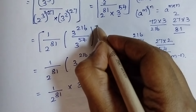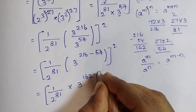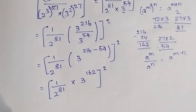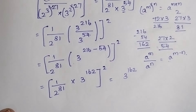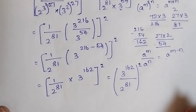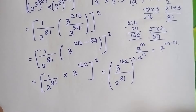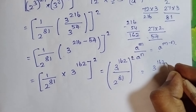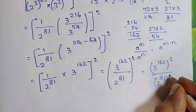Note that there is still a square applied to the whole expression that I had set aside. Applying that square to every term, the expression becomes: 3 power 162 divided by 2 power 81, the whole squared. We can square the numerator and denominator separately, giving 3 to the power of 162, the whole squared, divided by 2 to the power of 81, the whole squared.